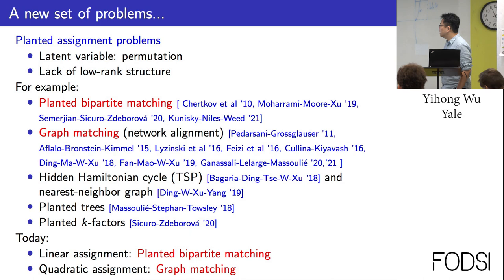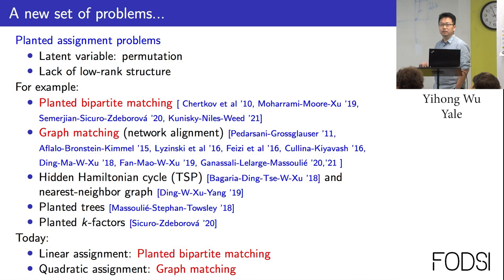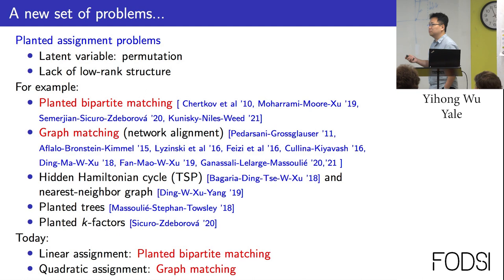More recently, there is a new set of problems — planted assignment problems — that do not have low-rank structure at all. The latent variable is usually a permutation, matching, assignment, or vertex correspondence. If you look at the data as a matrix, its expectation is not low-rank; for instance, it's a permutation matrix plus some constant.